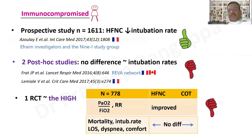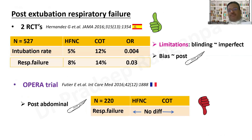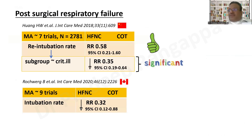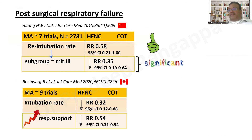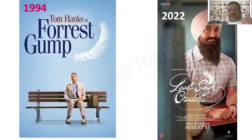In immunocompromised patients, trials compare HFNO with conventional oxygen, not NIV. Post-extubation respiratory failure — HFNO compared with conventional oxygen, not NIV. Post-surgical settings — HFNO compared with conventional oxygen, not NIV. Across all respiratory failure categories, HFNO is only compared with conventional oxygen therapy, never with NIV. Therefore, HFNO simply cannot compete with NIV, and holds promise only in a very limited group of patients.